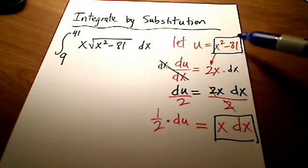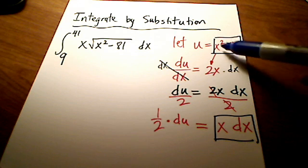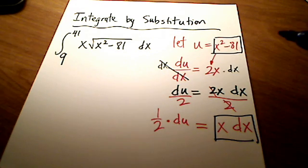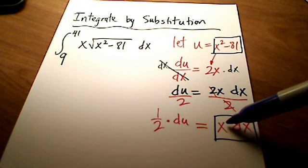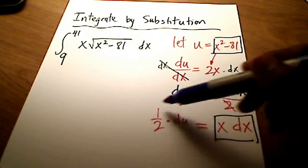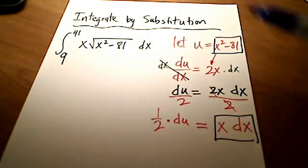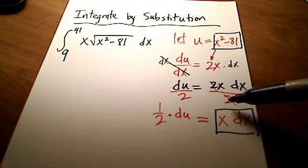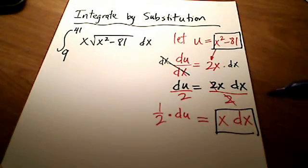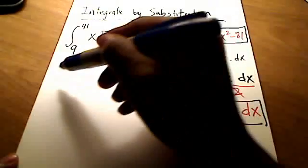Okay. So I've got in place of u, I've got an x squared minus 81. Or in place of x squared minus 81, I've got a u. Maybe I should say it that way. And in place of xdx, I'm going to put in a 1 half du. Alright. So let's rewrite our original problem now with these variables or the substitution going on here.